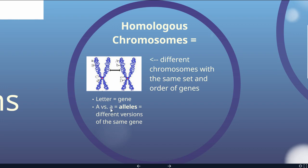Capital letters versus lowercase represent alleles — different versions of the same gene. So one version of a gene may produce freckles and another produces a protein that doesn't. One might code for dark hair, another for light hair. Homologous chromosomes will have the same set and order of genes, but not necessarily the same version — it's still coding for the same property, but maybe a slightly different version.